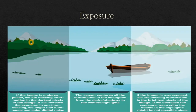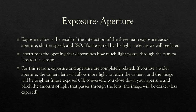Here is an example: the under-exposed image on the left is quite dark — we are missing information in the darkest pixels. The over-exposed image on the right is very bright — we are missing information in the bright regions. The middle picture is the perfectly exposed capture, which is neither over-exposed nor under-exposed.